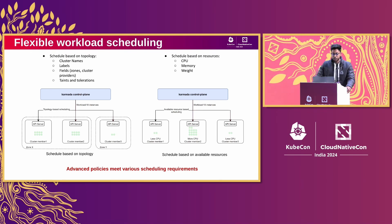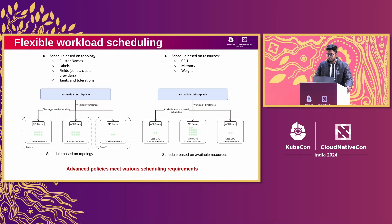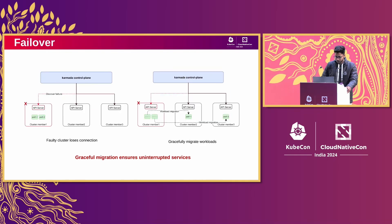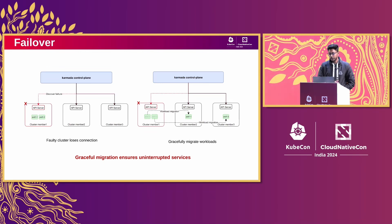When it comes to scheduling, Karmada is very flexible. It allows you to schedule workloads based on different parameters, like cluster names, labels, taints, tolerations, and you can even use resource-based scheduling with CPU, memory, and weight. Karmada also has a failover mechanism: when a cluster goes down, it will gracefully migrate those resources to healthy clusters without any interruption in services.